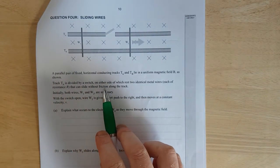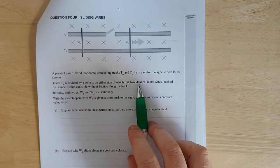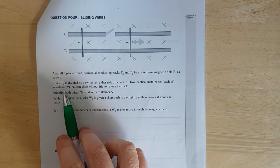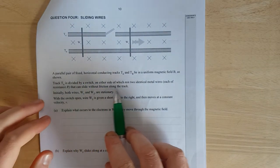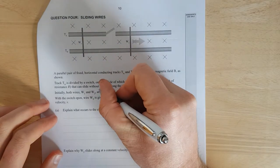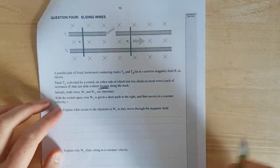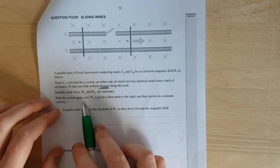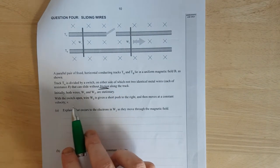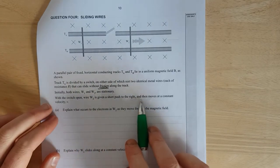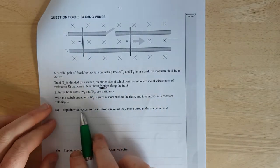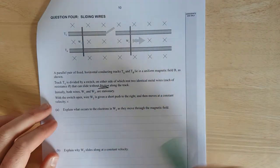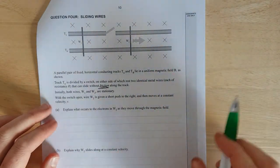Parallel pair of fixed horizontal conducting tracks, track A and B, lie in a uniform magnetic field as shown. Track A is divided by a switch on either side of which rests two identical metal wires, each of which has resistance R that can slide without friction along the tracks. Initially both W1 and W2, or Y1, Y2 are stationary. With the switch open, Y2 is given a short push to the right and then moves at a constant velocity V. So they push that one there to the right and moves just away at a constant velocity because the tracks are frictionless.